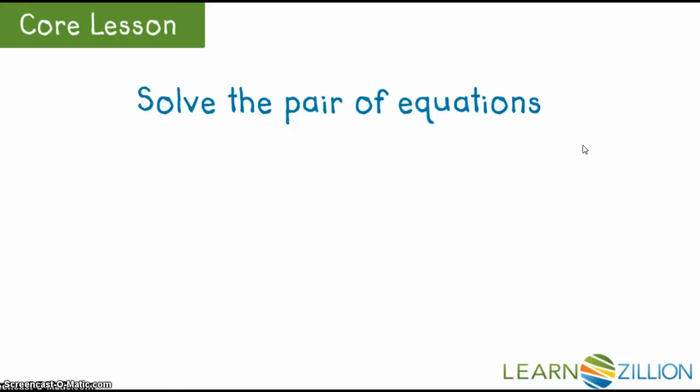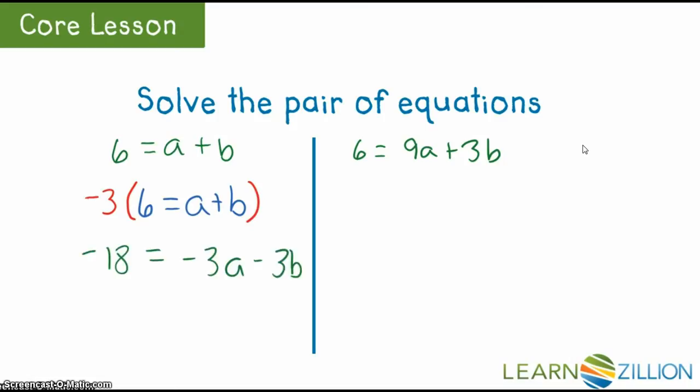Now we solve for a and b using either substitution or elimination. I am going to scale up the left-hand equation by negative 3. I chose the left-hand equation because the coefficients of a and b were both 1, which made the multiplication easier. As long as I end up with the same or opposite coefficients for a or b, I can scale either equation.